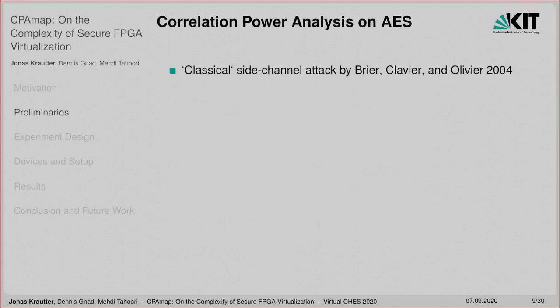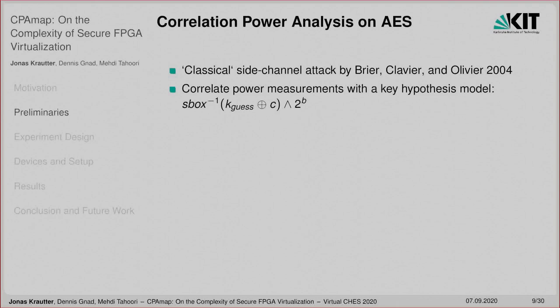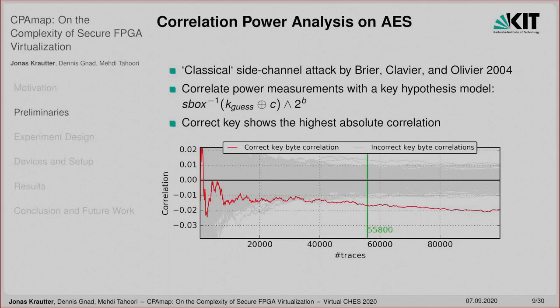To assess the side-channel vulnerability, we make use of a classical Correlation Power Analysis (CPA) attack on the Advanced Encryption Standard from 2004. This attack is based on correlating sensor measurements with a key hypothesis model where the key can be attacked byte-wise. We use a bitwise correlation model attacking the last encryption round of AES. The correct key among the 256 possible values for the key byte K-guess shows the highest absolute correlation. When plotting the correlation over the number of collected traces, the correct key byte can be visually distinguished after a certain amount of traces, which we use as our measure of side-channel vulnerability.